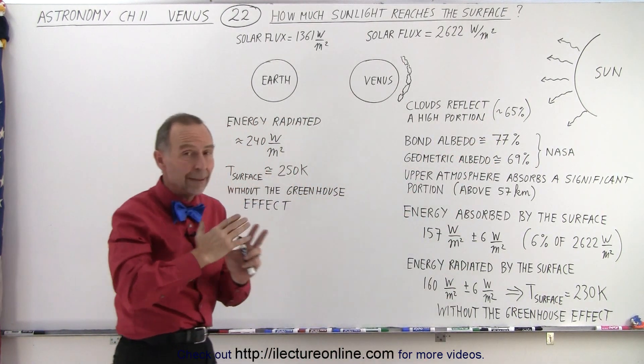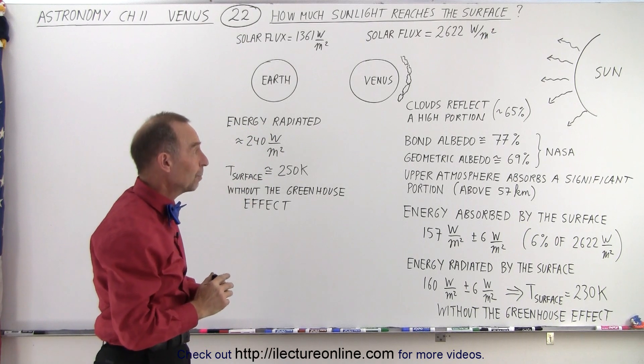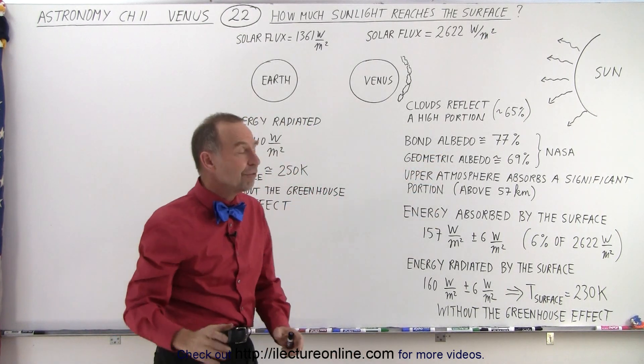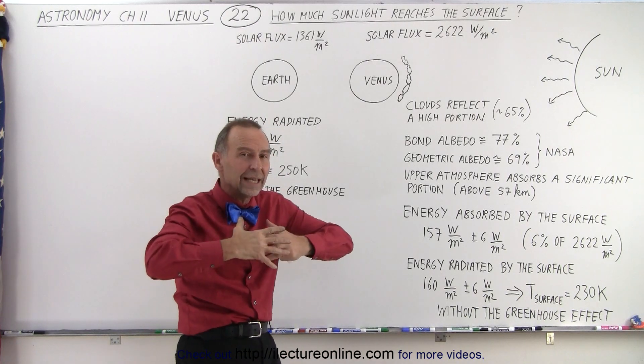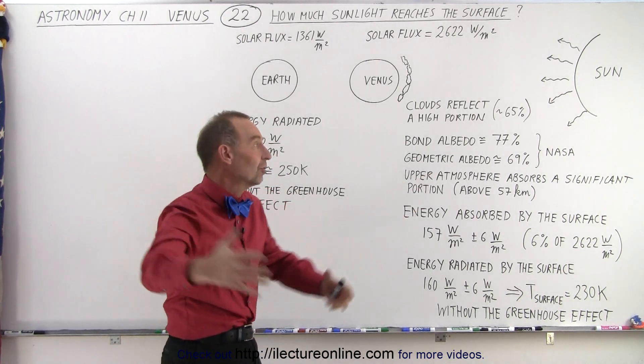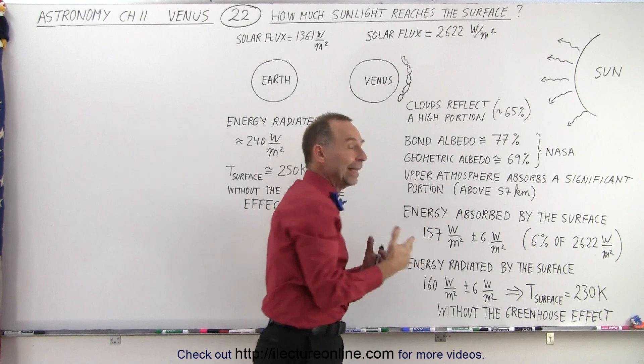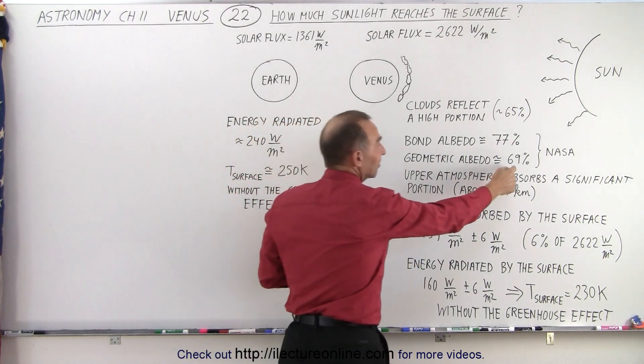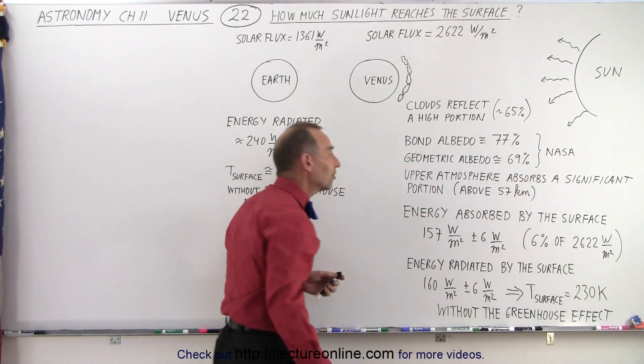About two-thirds of all the light bounces out of the clouds and goes back into space. That is why the albedo is so high on Venus. The bond albedo, which is the energy reflected in all directions, is about 77%. And the energy that's reflected straight back where it came from is about 69% according to NASA.